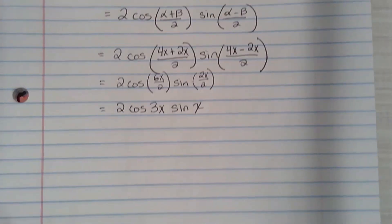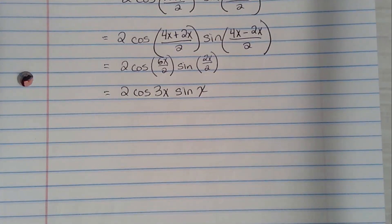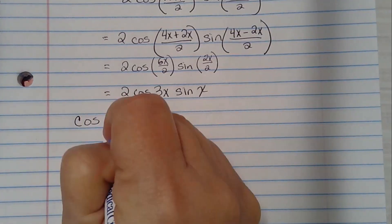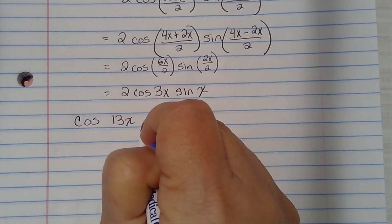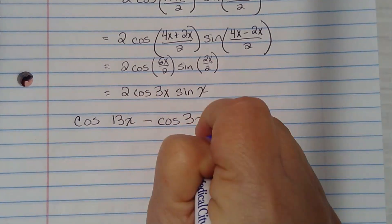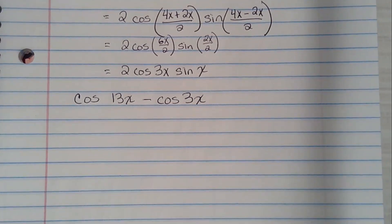All right. Let's do another together. We're going to take cosine of 13x minus cosine of 3x. And we're going to do the same instructions. We want to express this as a product. So since it says to do a product, you would go to your trig chart and go down to where it says sum to product and find the one that has cosine minus cosine. Do you see it in the bottom right hand corner?